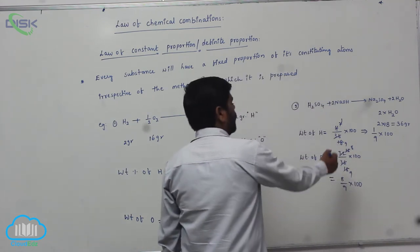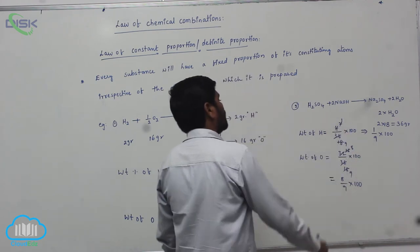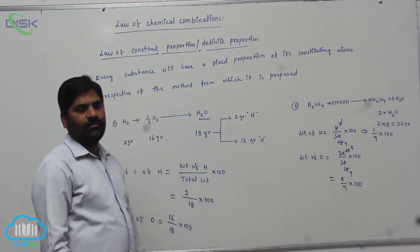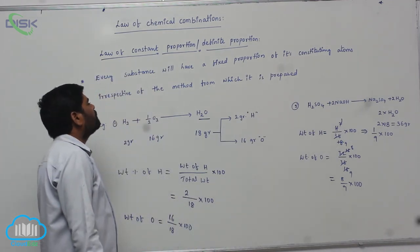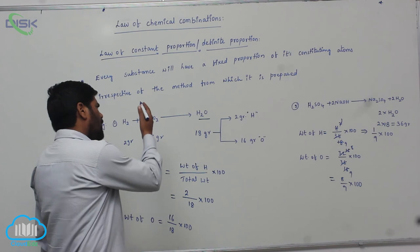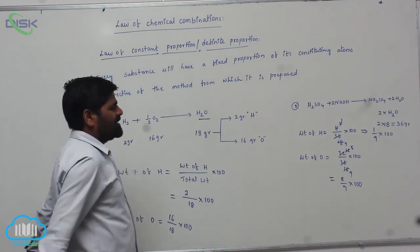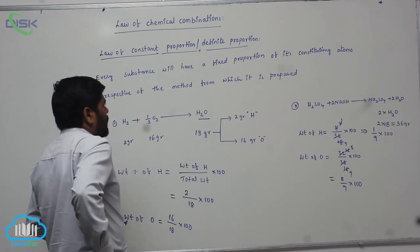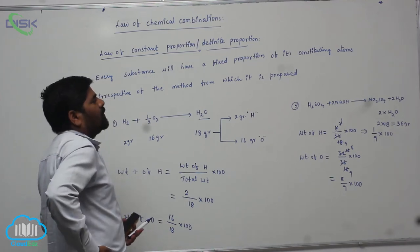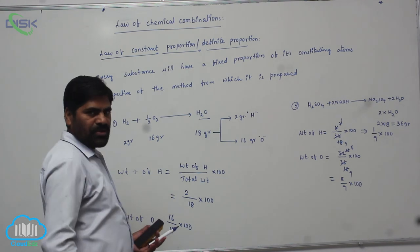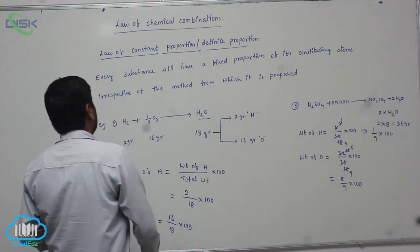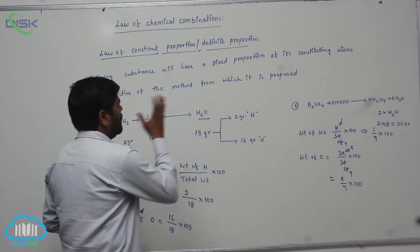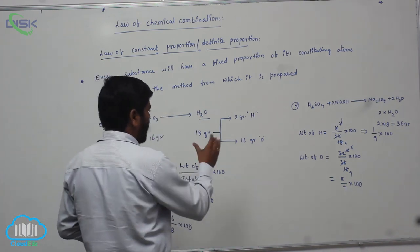So therefore, by combining of these two, we will get 100 percent. So therefore, in any chemical reaction, if any one of the substance is formed, its proportion is fixed. Its proportion is always fixed. Therefore, this particular law is known as Law of constant proportions or definite proportions.